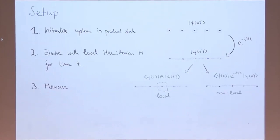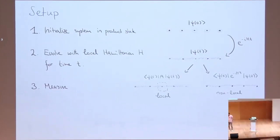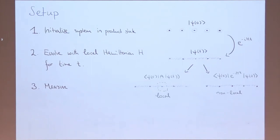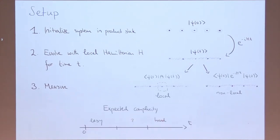This is what we try to address: when is it hard to simulate something like this, or when is it easy? To be more concrete, the setup we had in mind is: we initialize the system in some product state, evolve it under some local Hamiltonian H for some time t, and at the end we measure something — either a local operator or something non-local like the overlap with the initial state, which I call the Loschmidt echo. What you naively expect is that at short times this problem is easy, since quantum correlations take time to build up, and at long times it's probably hard.